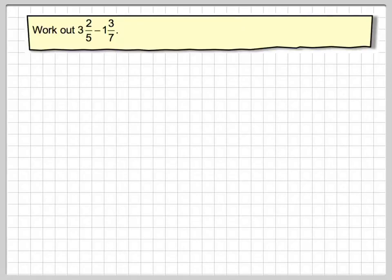In this video we're going to subtract mixed numbers. We're going to work out 3 and 2 fifths minus 1 and 3 sevenths.